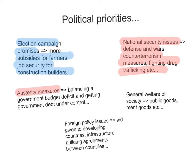Austerity measures are another factor. Some governments claim that they can balance a government budget deficit and get government debt under control. When governments borrow a lot of money, politicians running for office use that as a way to become popular by promising to balance the budget deficit. Governments also spend for the general welfare of society, providing public goods like roads and defence, and merit goods like education and healthcare.